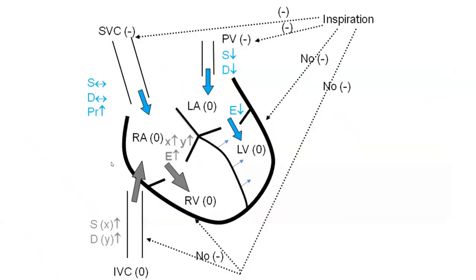This is a very highly specific finding in constriction, and you do not find it in the other two. The RV and LV are constrained within one shell; they are both underfilled and preload dependent. The volume of one has to expand at the expense of the other, expanding across the septum. In inspiration, the RV volume increases; in expiration, the LV volume increases.